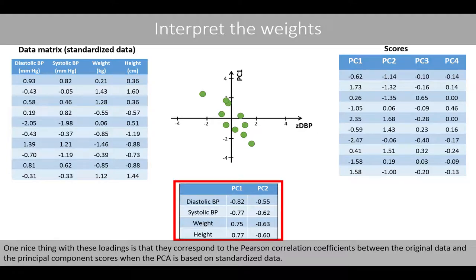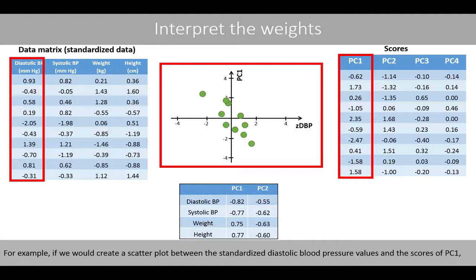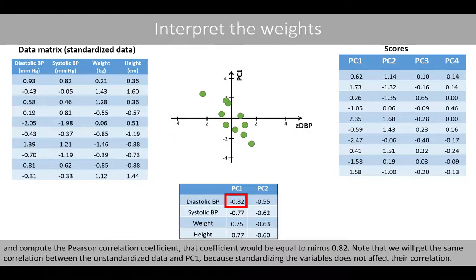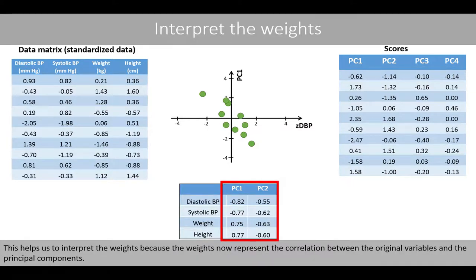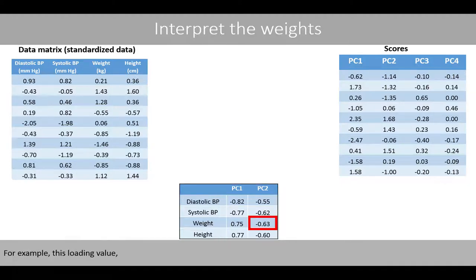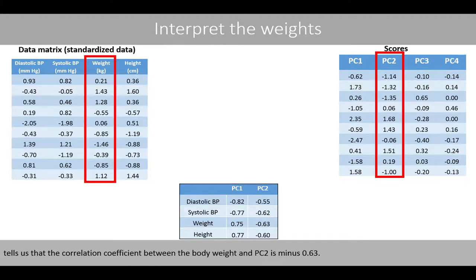One nice thing with these loadings is that they now correspond to the Pearson correlation coefficients between the original data and the principal component scores when the PCA is based on standardized data. For example, if we create a scatter plot between the standardized diastolic blood pressure values and the scores of PC1 and compute the Pearson correlation coefficient, that coefficient would be equal to minus 0.82. Note that we'll get the same correlation between the unstandardized data and PC1 because standardizing the variables does not affect their correlation. This helps us to interpret the weights because they now represent the correlation between the original variables and the principal components. For example, this loading value tells us that the correlation coefficient between the body weight and PC2 is minus 0.63.